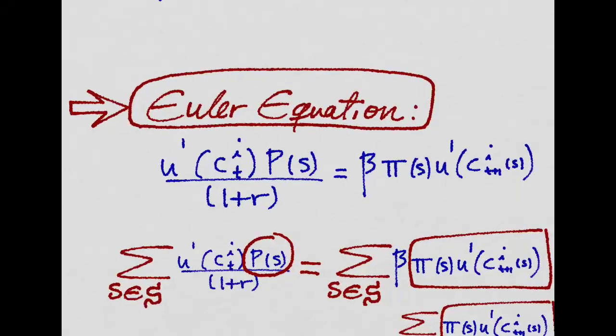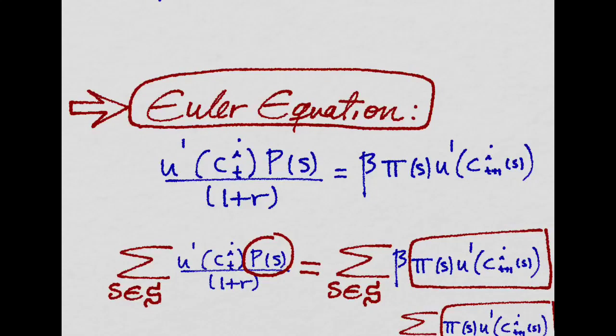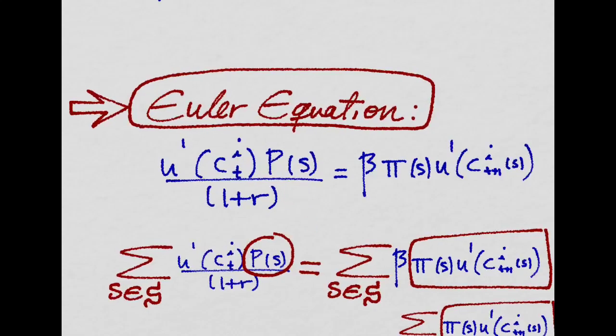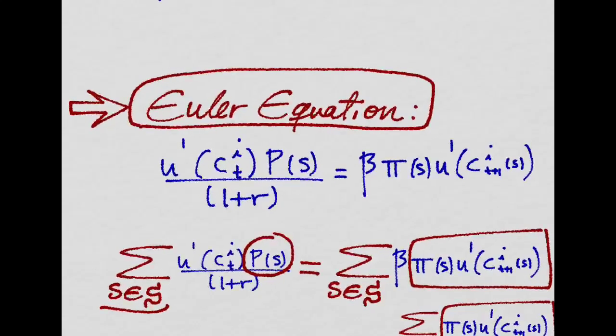Recall we were left with this Euler equation after maximizing the agent's lifetime utility subject to his budget constraint. This Euler equation holds for any state, so we wish to sum across all states of the world for some T.